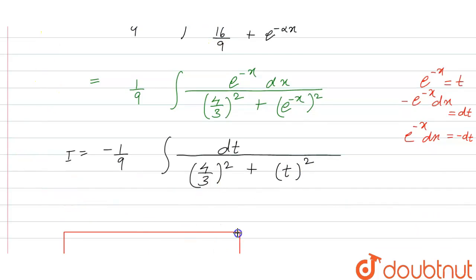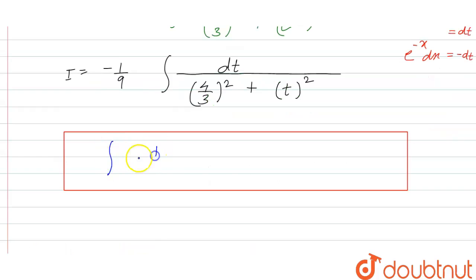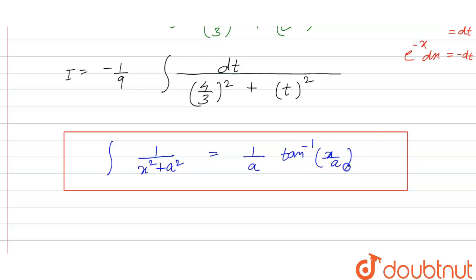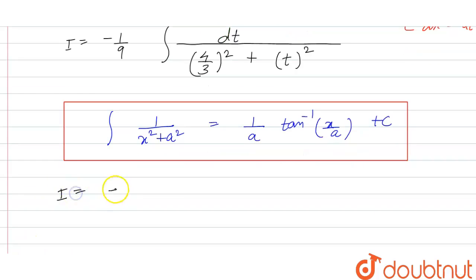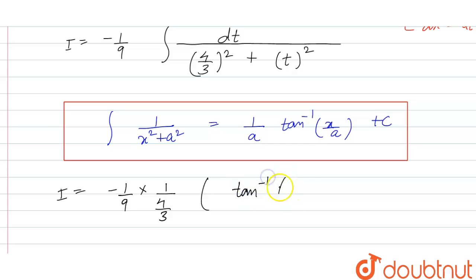We use the result: the integral of 1 upon x squared plus a squared equals 1 by a times tan inverse of x by a plus c. Using this result, the value of I becomes minus 1 by 9 into 1 by a, where a is 4 by 3, into tan inverse of t divided by 4 by 3, plus c.